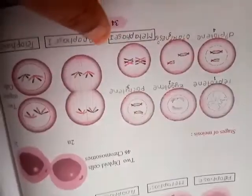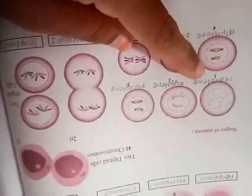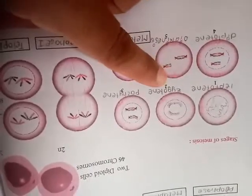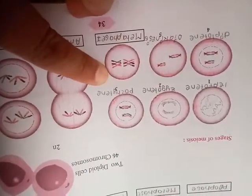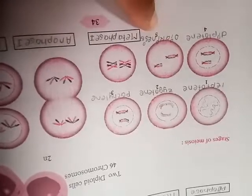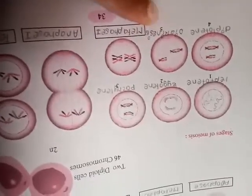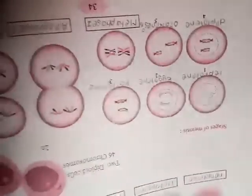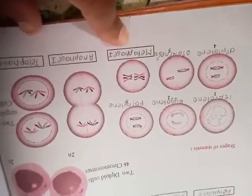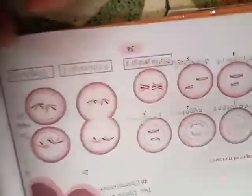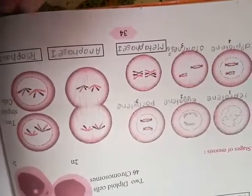Now the names of these five steps: first is leptotene, second is zygotene, third is pachytene, fourth is diplotene and fifth one is diakinesis. And afterwards the other steps that is metaphase 1, anaphase 1 or telophase 1, these are identical to the mitotic cell division. There is no change.